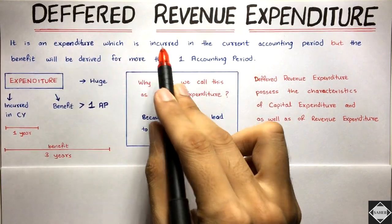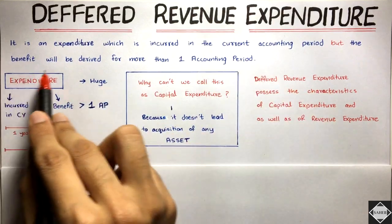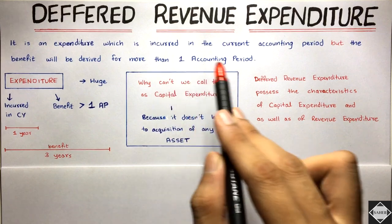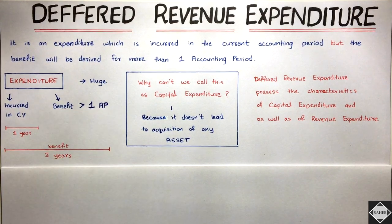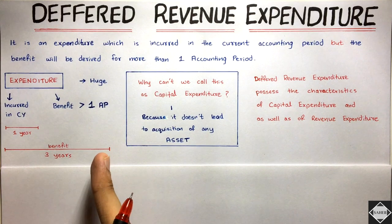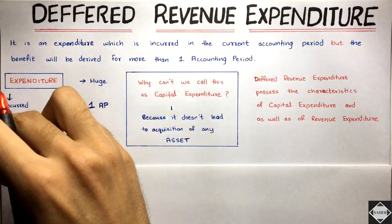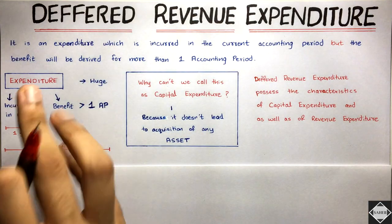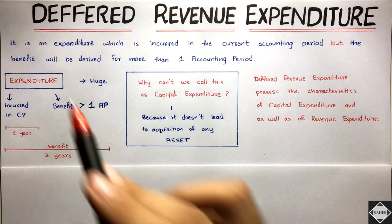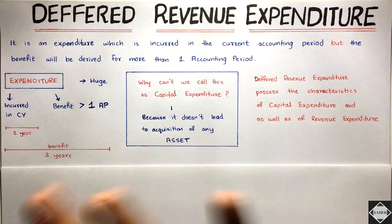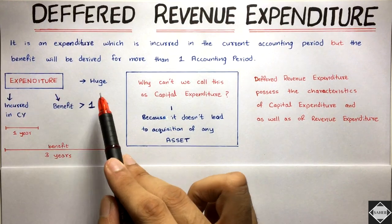Deferred revenue expenditure is an expenditure incurred in the current accounting period, but the economic benefit from that expenditure will be derived for more than one accounting period — three, four, or five years. For normal revenue expenditure, the benefit is also in the current year only. But deferred revenue expenditure is incurred in the current year while the benefit extends beyond one accounting period, and mostly this expenditure is huge.